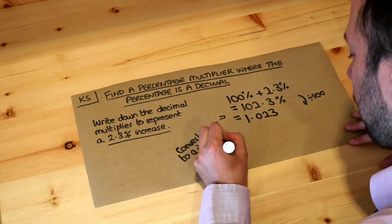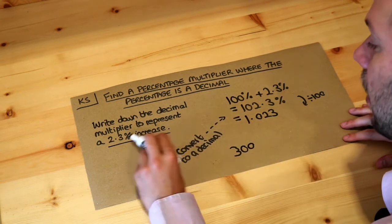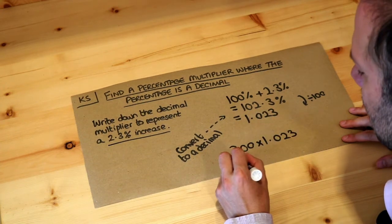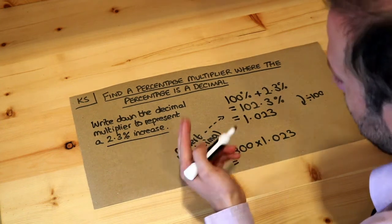For example, if I had 300 and I wanted to increase 300 by 2.3%, I would multiply by 1.023. That makes sense because if I multiply 300 by 1, you would still have 300—it doesn't change it at all.